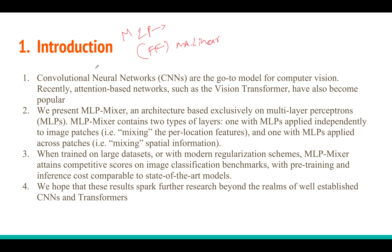As you know, in the computer vision community, convolutional neural networks were one of the most important architectures used before transformers. From around 2013 until 2018 or 2019, almost all computer vision algorithms — whether image classification, segmentation, video classification, or action classification — were built using CNNs. Recently, attention-based modules like transformers are performing better than convolutional models like ResNet, and a particular version called Vision Transformer is obtaining state-of-the-art performance for many computer vision tasks.